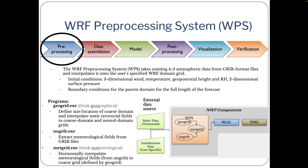In GeoGrid, it defines the size and location of the course domain and interpolates static terrestrial fields to the course domain and nested domain grids. UNGRIB extracts meteorological fields from the GRIB files. And METGrid horizontally interpolates meteorological fields from UNGRIB to the course grid that was defined in the GeoGrid step.